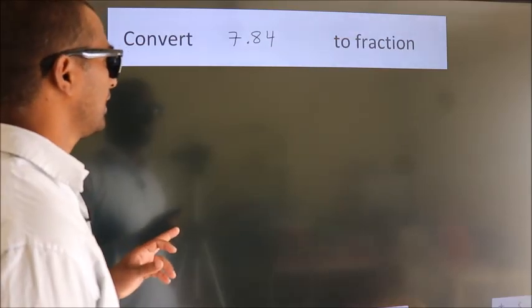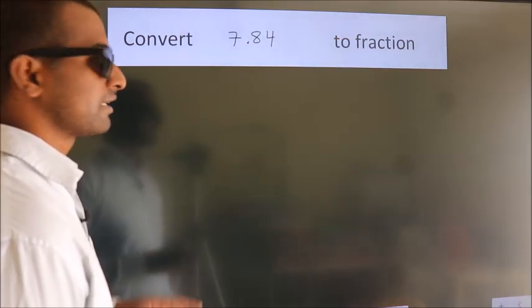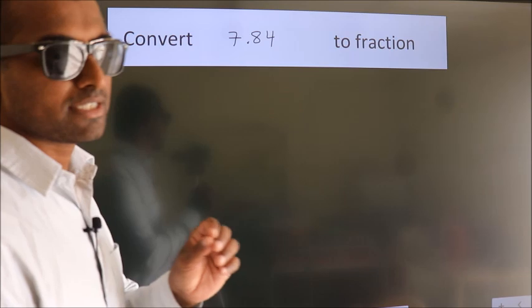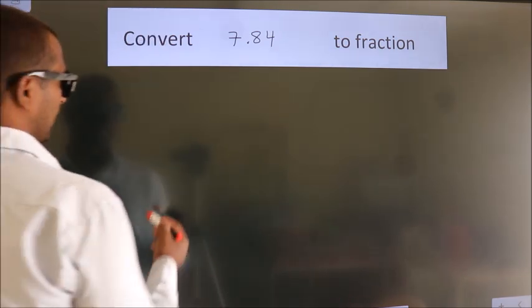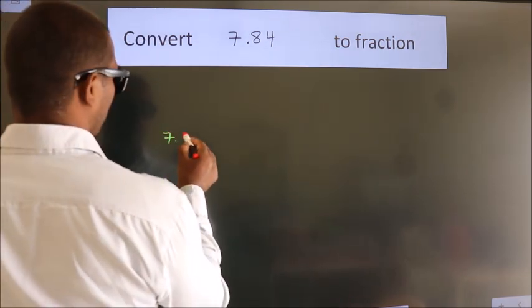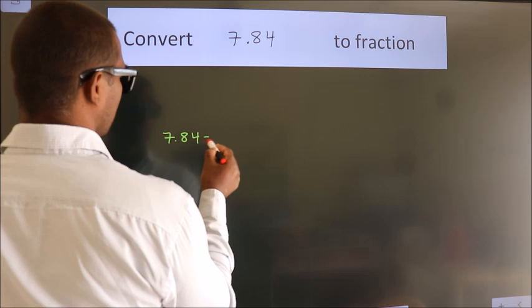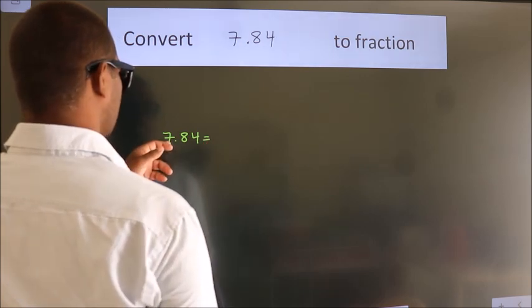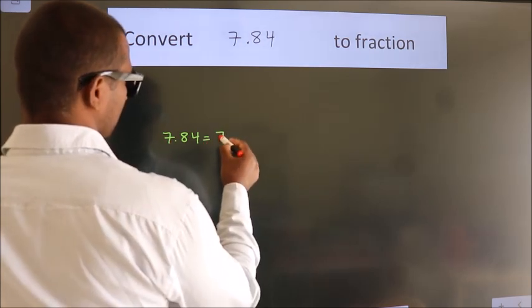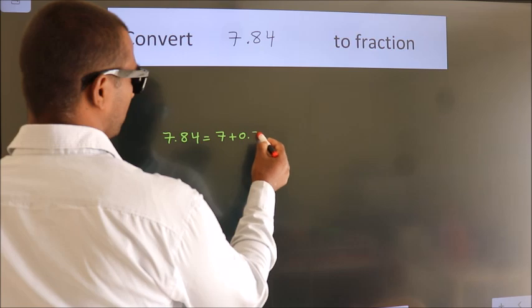Convert 7.84 to fraction. How do we convert this? Given is 7.84. First we should break this into 7 plus 0.84.